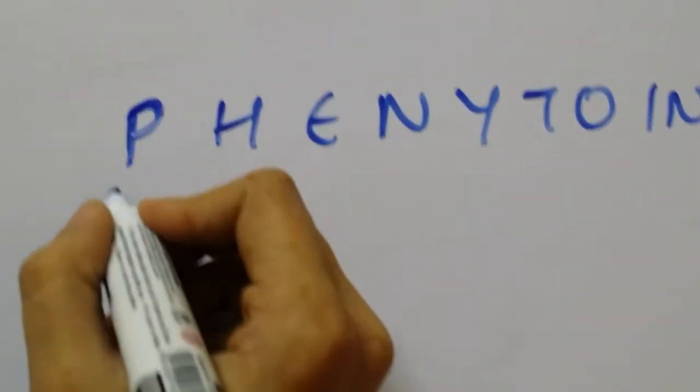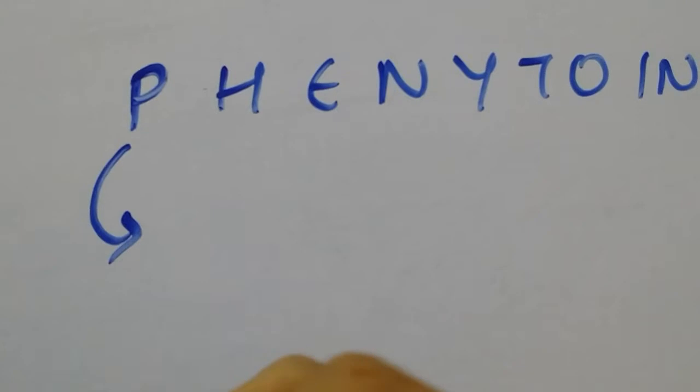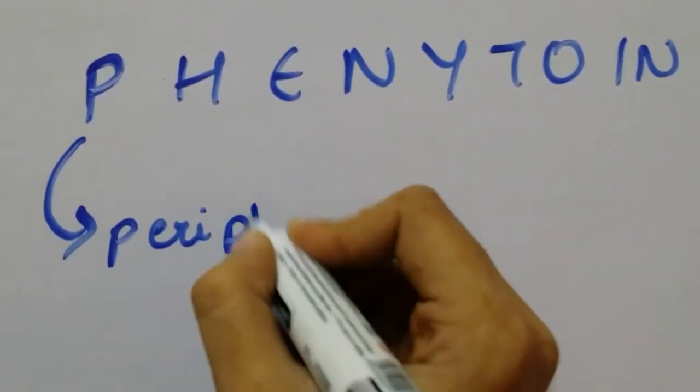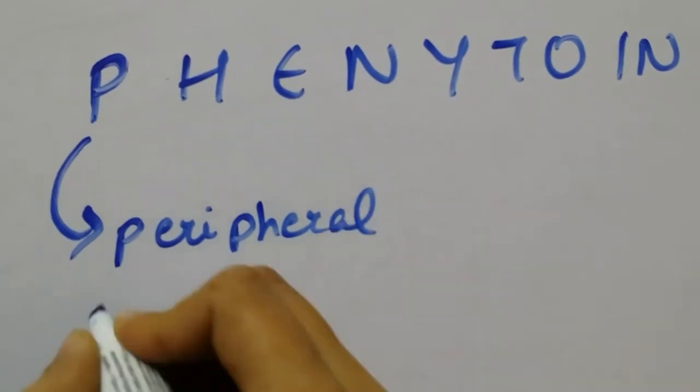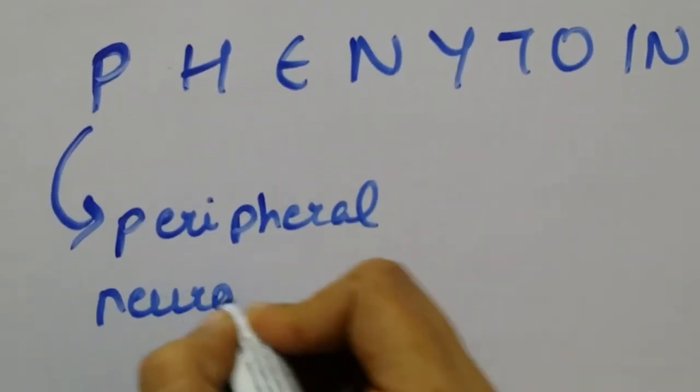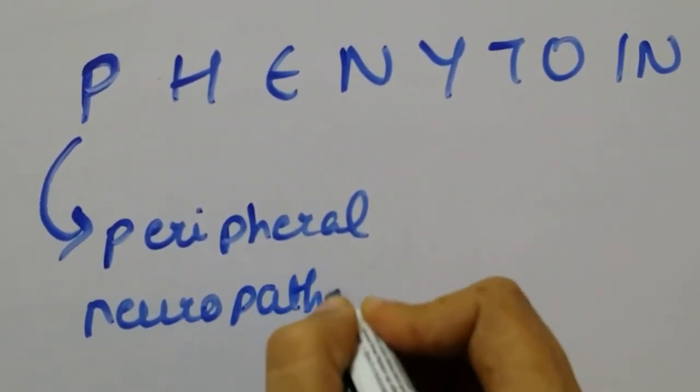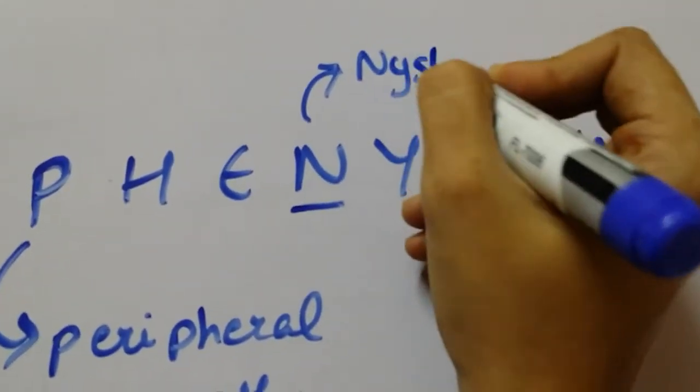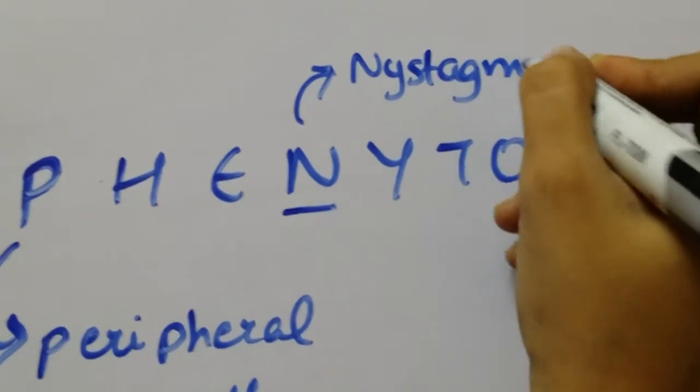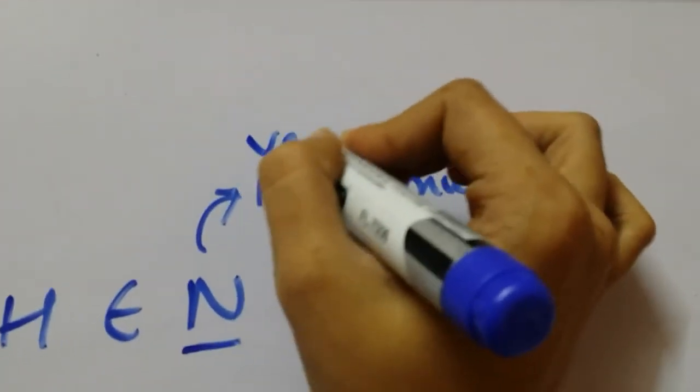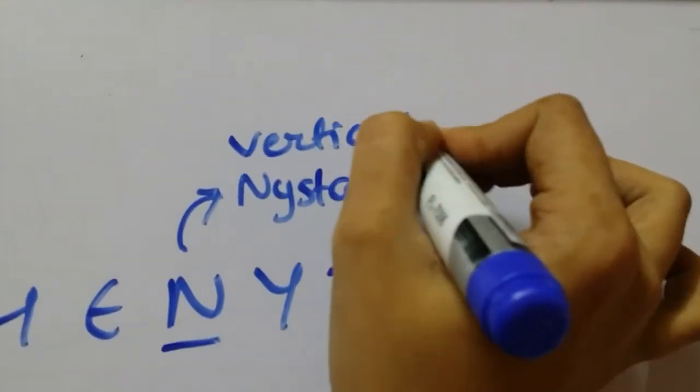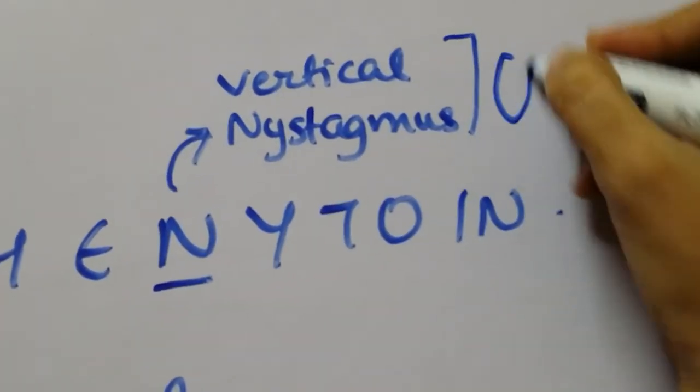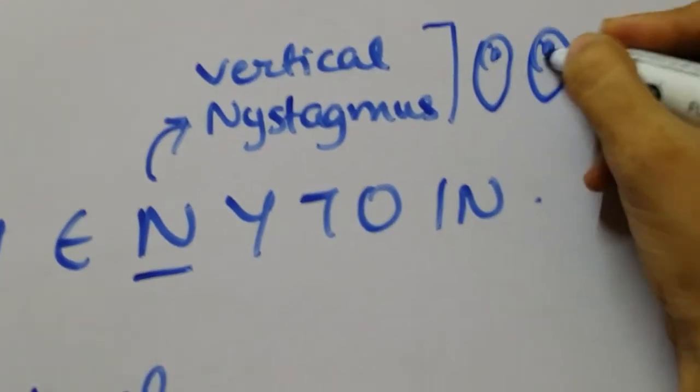The first side effect that you should know about is the neurotoxicity of phenytoin. It causes peripheral neuropathy. It also causes nystagmus, diplopia, and ataxia, but I think you should remember nystagmus, especially vertical nystagmus. You know, horizontal nystagmus is seen in a lot of conditions, but vertical nystagmus is very specific for phenytoin toxicity.